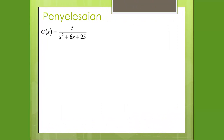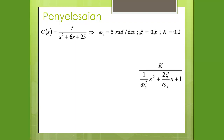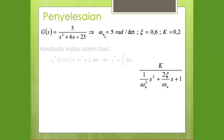Penyelesaian: G(s) = 5/(s² + 6s + 25). Persamaan ini harus dikembalikan ke bentuk order kedua standar, sehingga dibagi 25 semuanya, menghasilkan G(s) = 0.2 / (1/25·s² + 6/25·s + 1). Dari sini, 1/ωn² = 1/25, sehingga ωn = 5 rad/s. Untuk ζ, dari 2ζ/ωn = 6/25, diperoleh nilai ζ = 0.6. Ini adalah parameter-parameter dari plant itu sendiri.